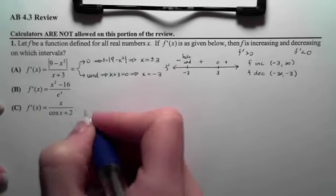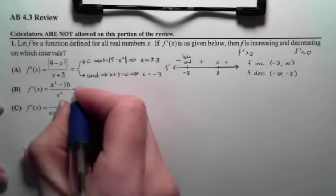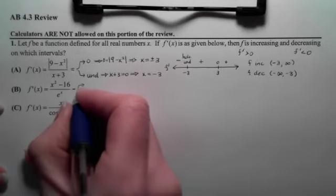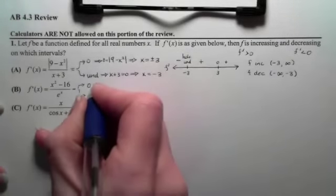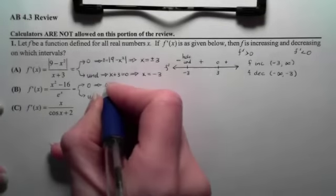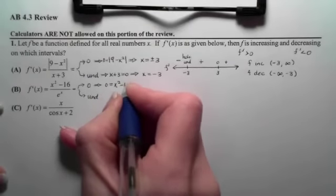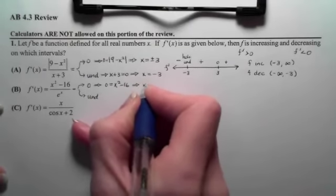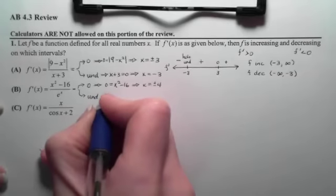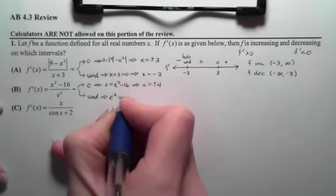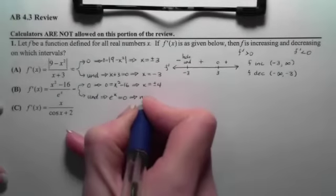If we look at part b, again, we're going to do the same scenario. We want this to be 0 or undefined. It will be 0 when the top is 0, and that occurs when x is plus or minus 4. It will be undefined when the bottom is 0, but exponentials never equal 0, so that never happens.